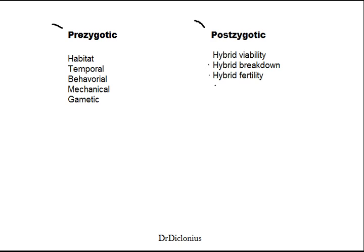Hybrid fertility — the perfect example for this would be a mule. A horse mates with a donkey and it becomes a mule. The mule is perfectly fine — it's a viable offspring — but it is infertile and it can't have offspring. And this is the major difference between prezygotic and postzygotic reproductive isolation.